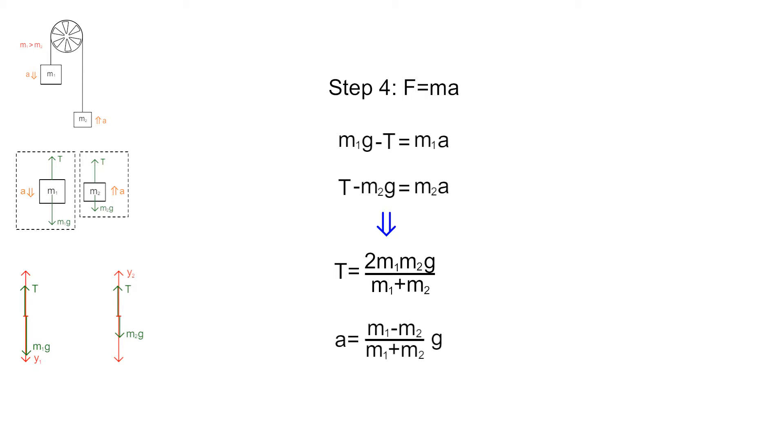And A equals M1 minus M2 divided by M1 plus M2 times G. This last equation represents the chief prediction of the experiment. Your data should either support or refute this statement.